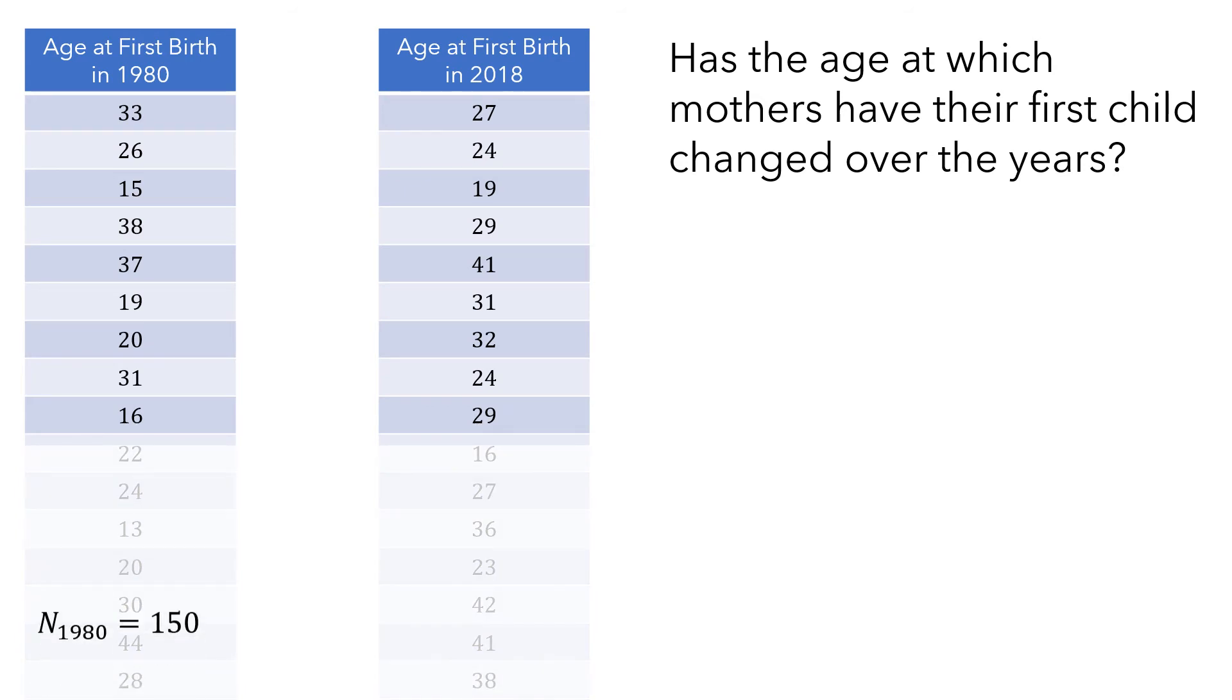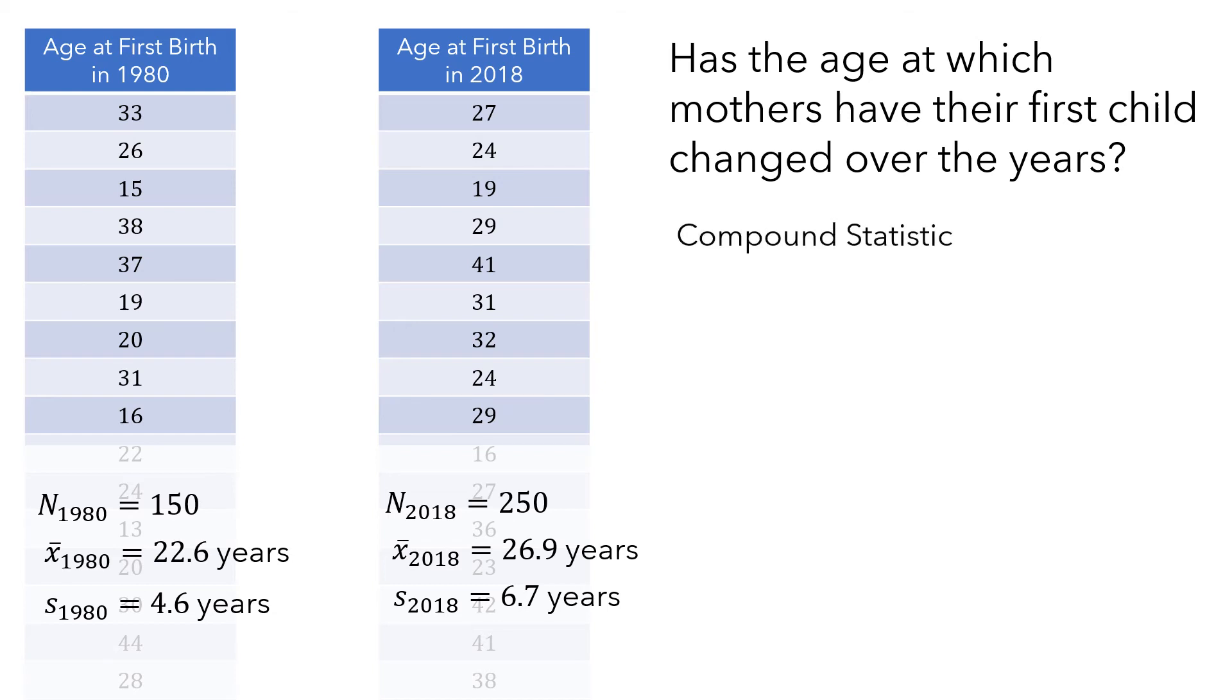And you record some summary statistics. These samples were of 150 and 250 people. They had means of 22.6 years and 26.9 years. And they had standard deviations of 4.6 and 6.7 years. Now, to use a t-distribution, we need to know the compound statistic, the standard error, that is, the standard deviation of the sampling distribution, and the degrees of freedom.